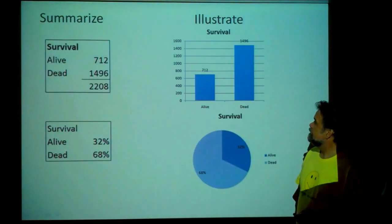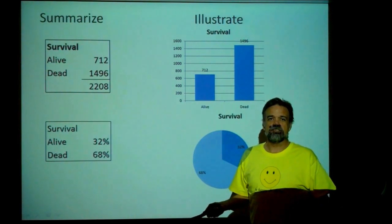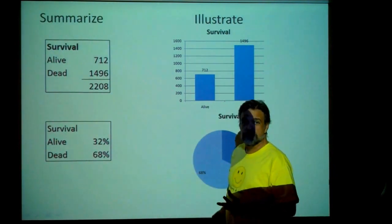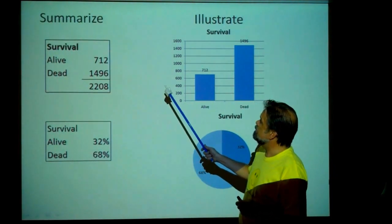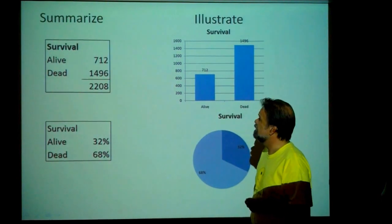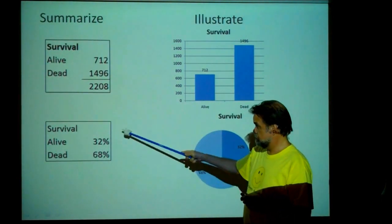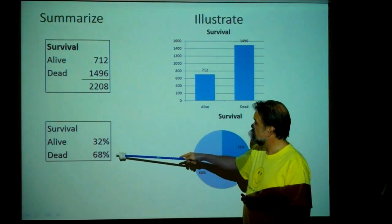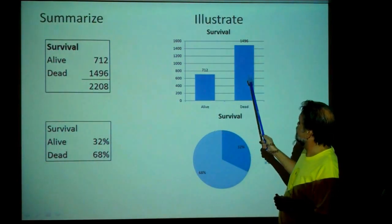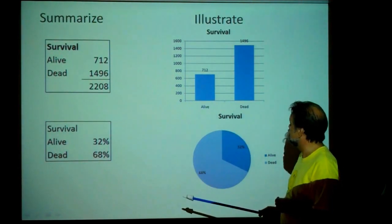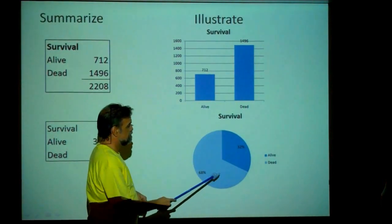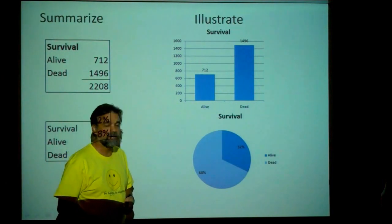Now let's look at the reason the Titanic was famous — a lot of people died. Here's the survival variable: 712 people were found alive, 1,496 died. More than twice as many people died as survived. 68% of the people died, as we can see from the relative frequency table, bar chart, and pie chart.